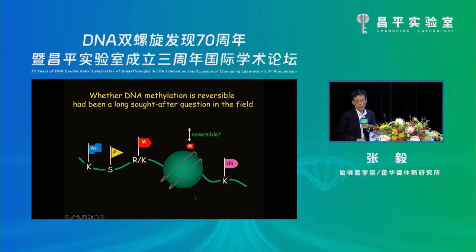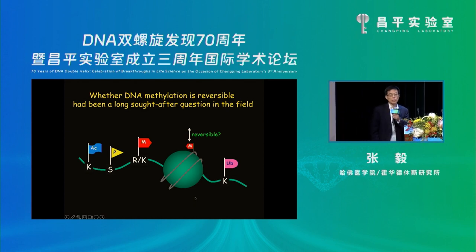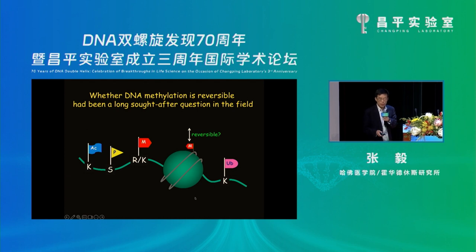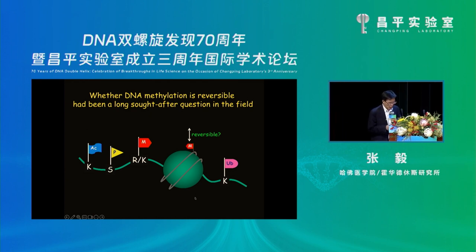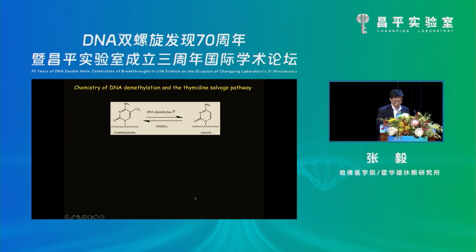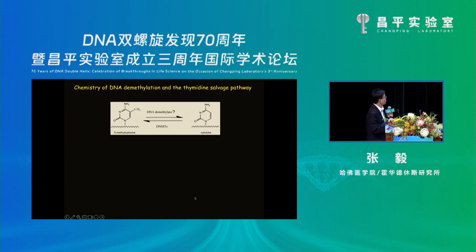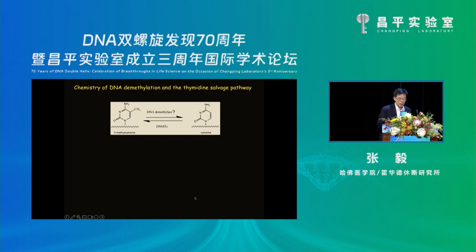After we showed that histone methylation can be reversed by the Jumongi family proteins, we started to attack the next question: whether DNA methylation is reversible or not. To remove the methyl group — demethylation of DNA — you need to remove the methyl group attached to the five position of this pyrimidine ring. There's a previous reaction quite similar to this.